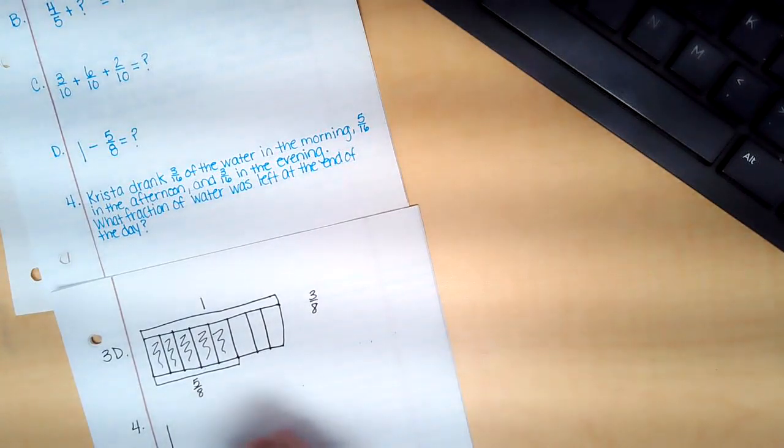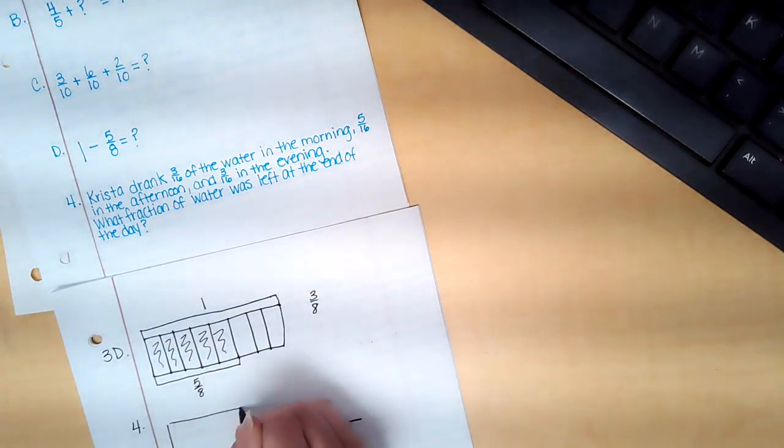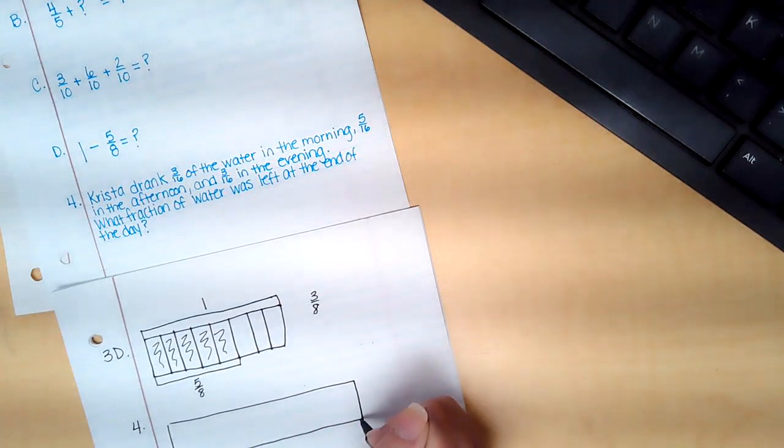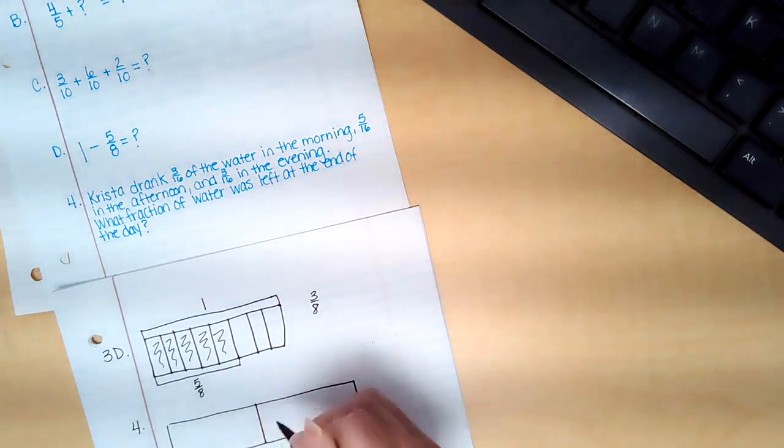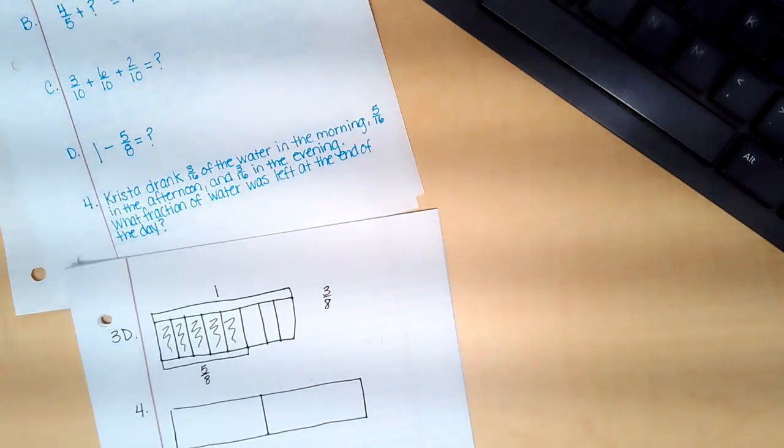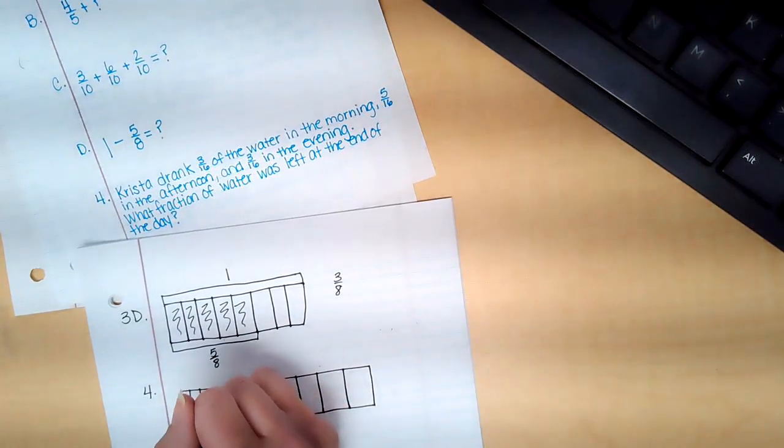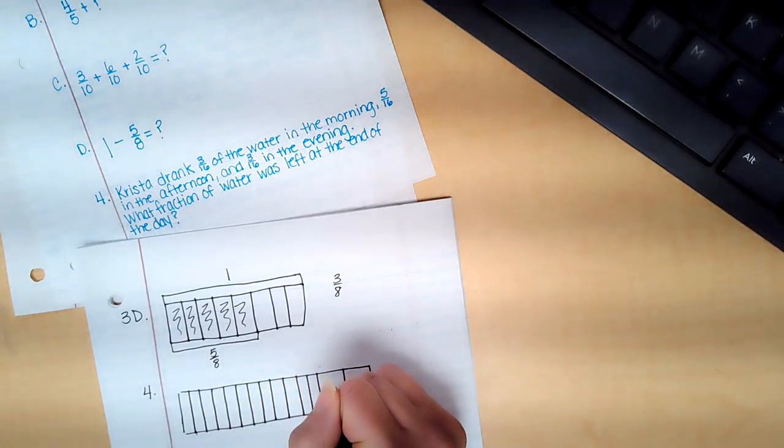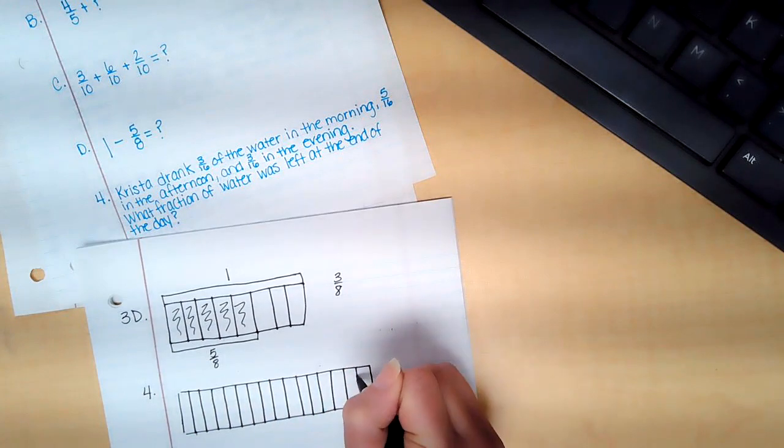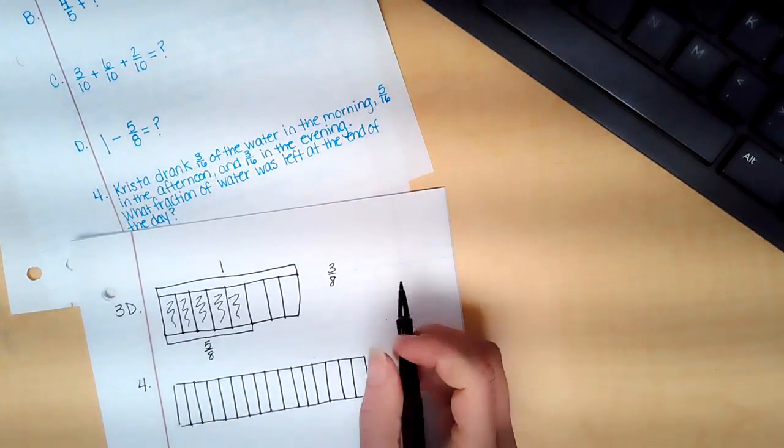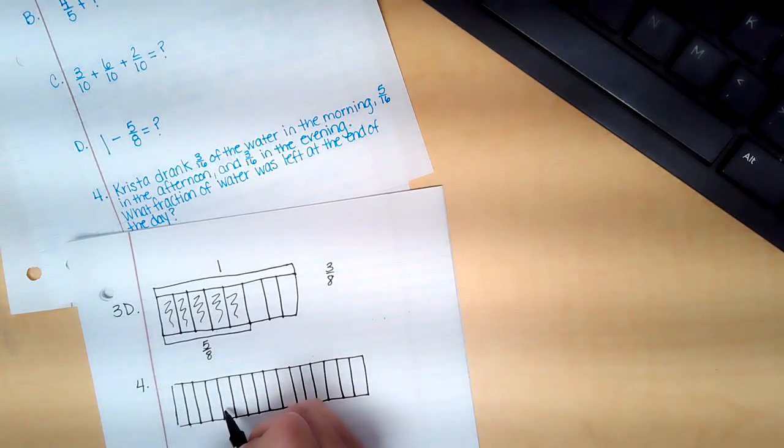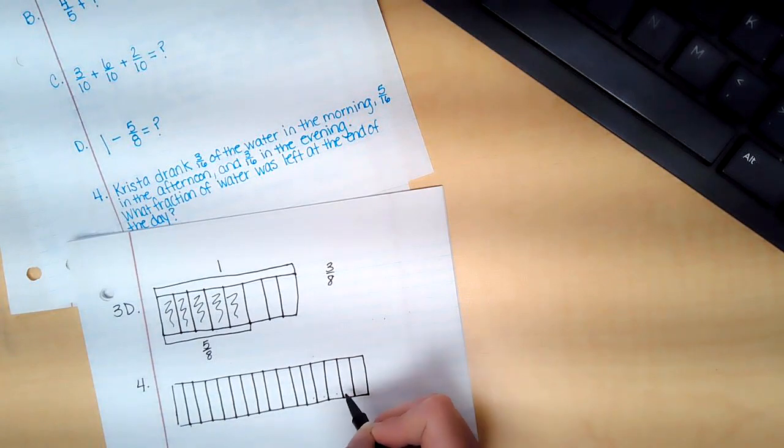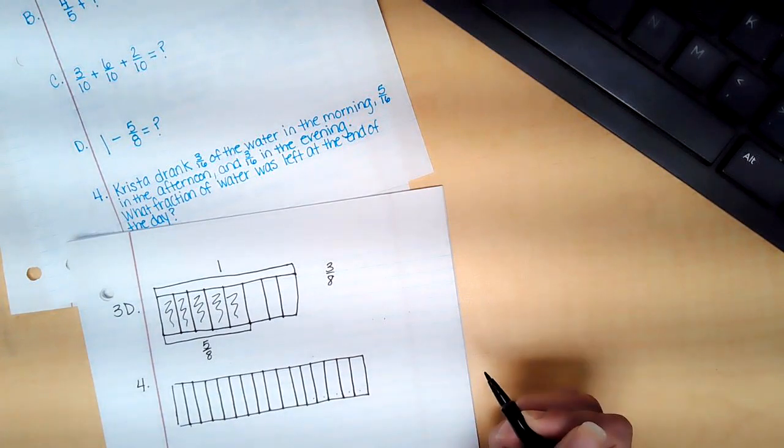Let's just do that. So I have one whole. It's going to have a lot of pieces, so let's see if I can do it right. Okay, so you can double count one, two, three, four, five, six, seven, eight, nine, ten, eleven, twelve, thirteen, fourteen, fifteen, sixteen.